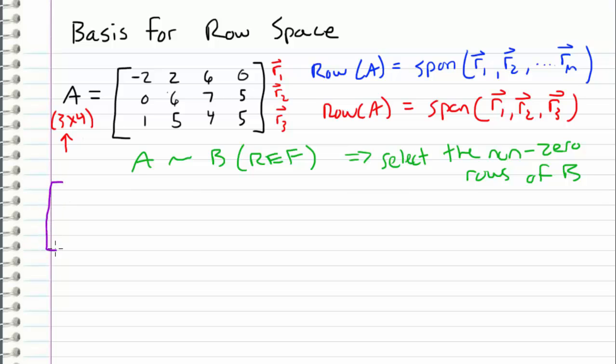So I'm going to start with the matrix that we originally have. So matrix A, which is negative 2, 2, 6, 0, 0, 6, 7, 5, and 1, 5, 4, 5.